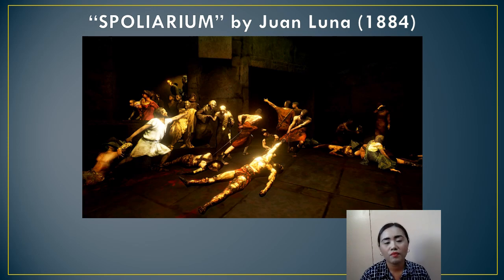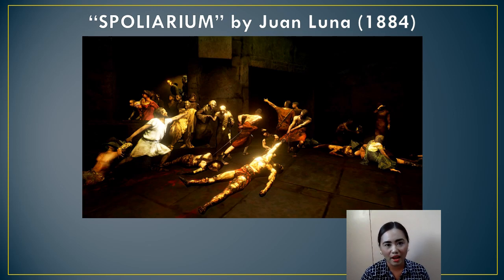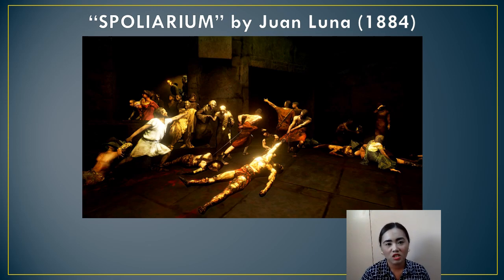The perfect example of the social function of art is this painting by Juan Luna entitled Spoliarium. The Spoliarium is currently displayed in the National Museum, and Luna won the gold medal in the Exposition of the Nacionales de las Bellas Artes in Madrid, Spain for this painting.